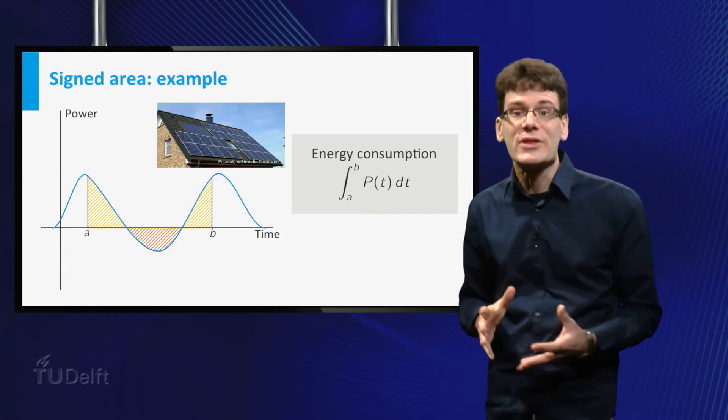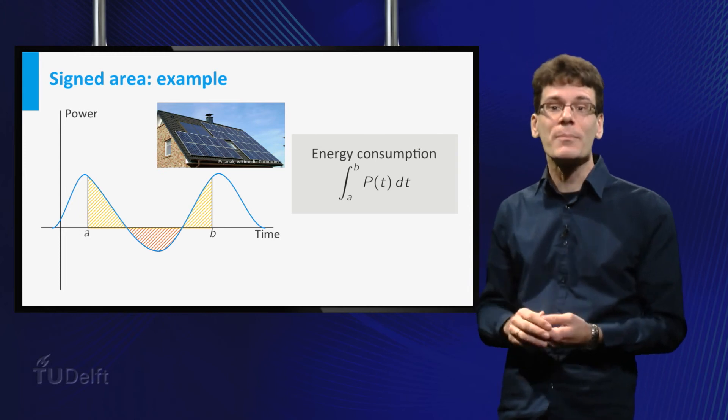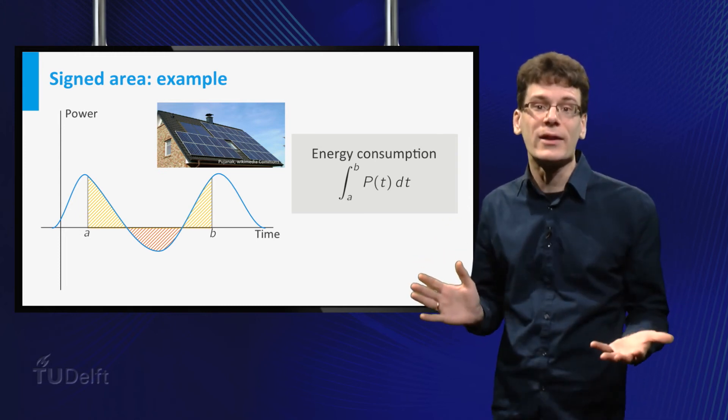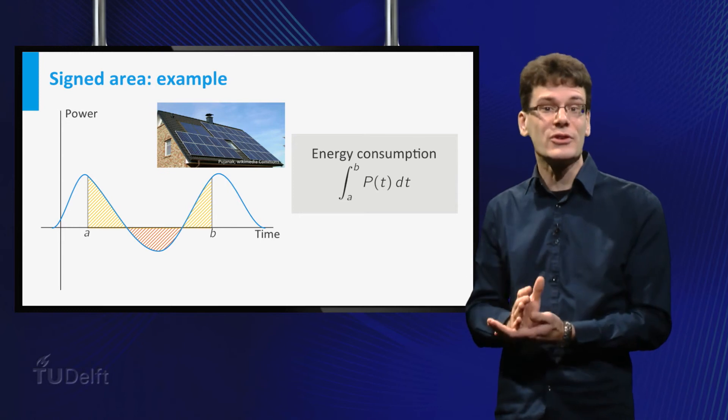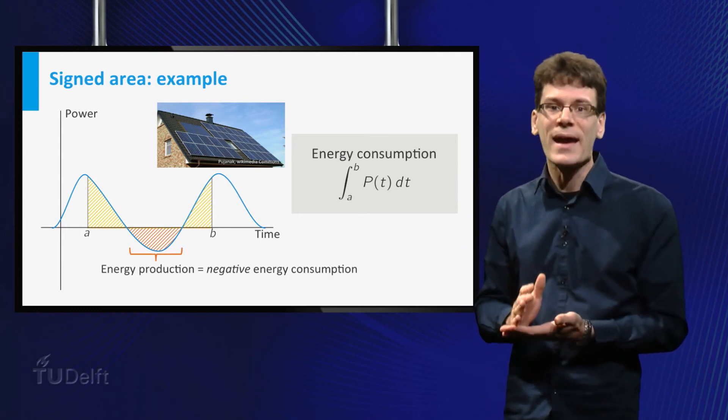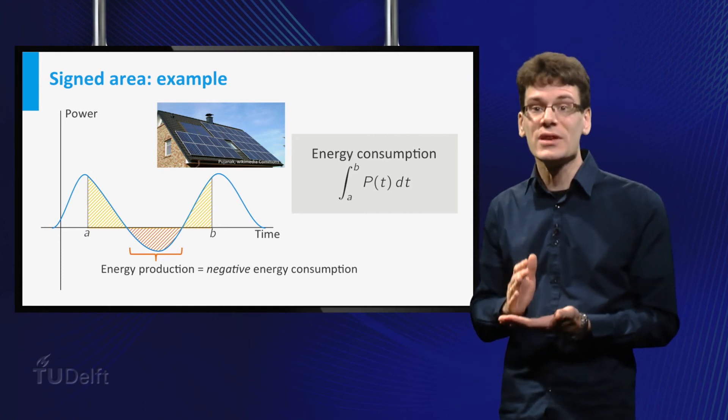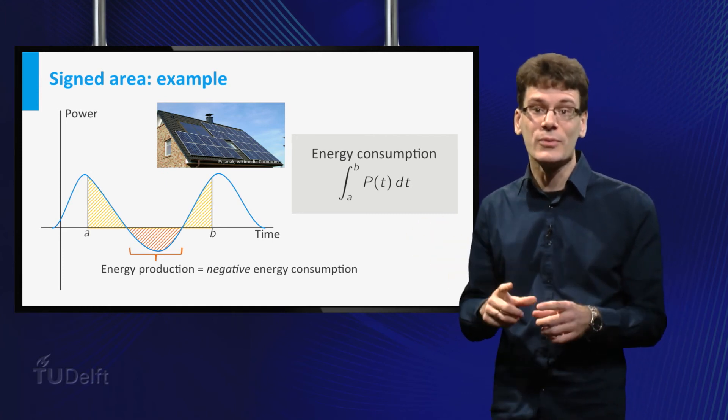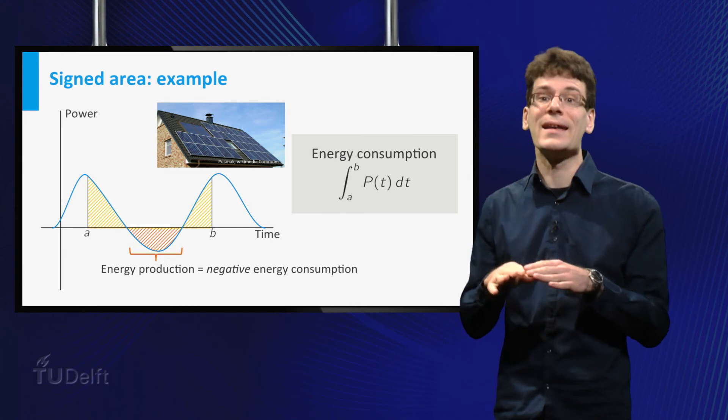Well, for example, if you live in a modern house with solar panels on the roof. On a sunny day, the solar panels may produce more power than you use at that moment. The amount of power you deliver back to the electricity network is equal to the total area between the negative part of the graph and the horizontal axis.